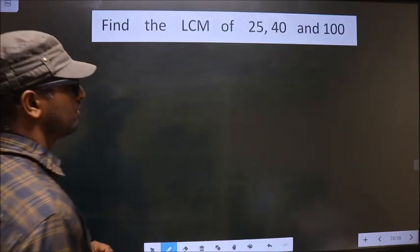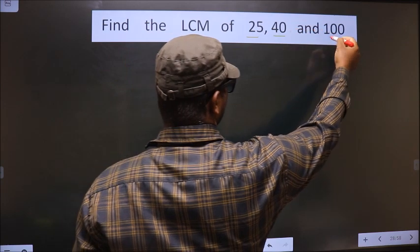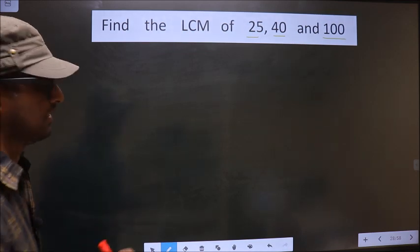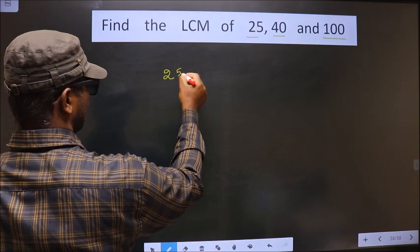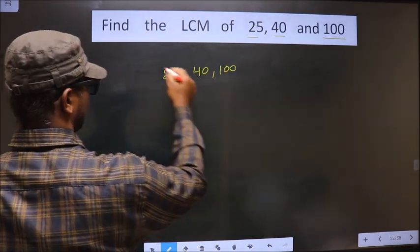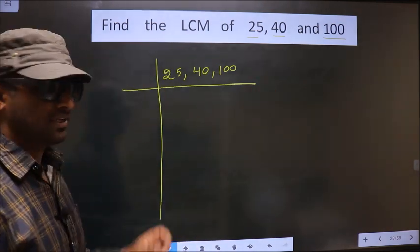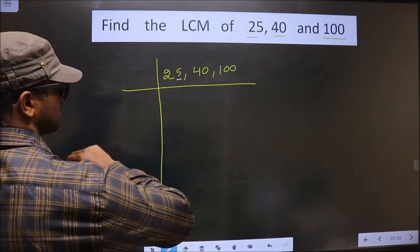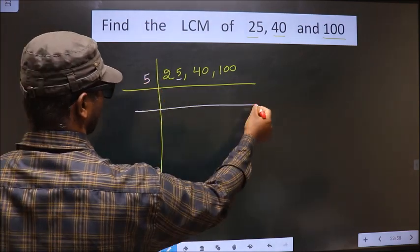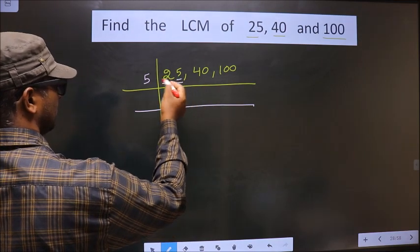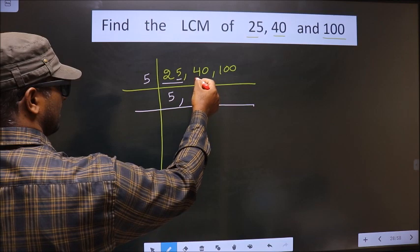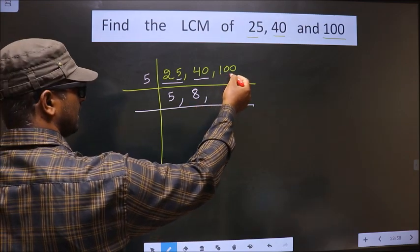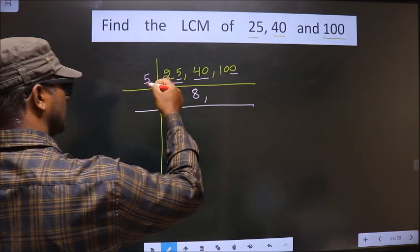Find the LCM of 25, 40, and 100. To find the LCM, first we frame it this way: write 25, 40, 100 — this is step 1. The first number's last digit is 5, so we take 5 as our divisor. 25 divided by 5 is 5 (since 5×5=25). 40 divided by 5 is 8 (since 5×8=40). The last number 100 also ends in 0, so it is also divisible by 5.